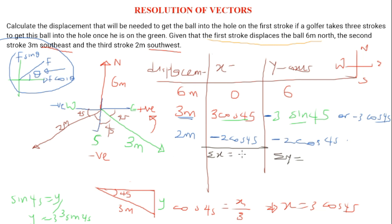Computing the values: 0.707 is root 2 over 2, which is the value of sin 45 or cos 45. The total summation of y-components gives 2.46 meters.